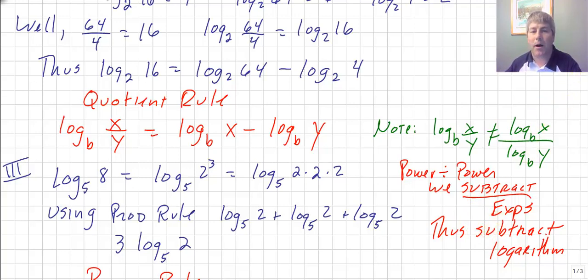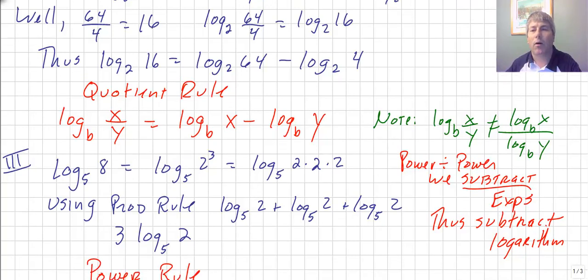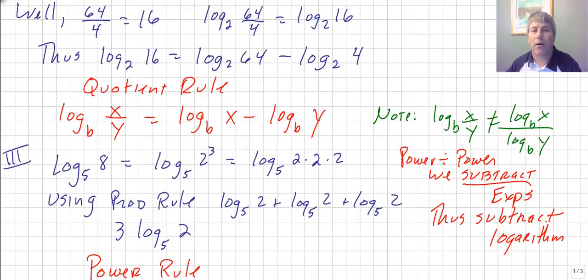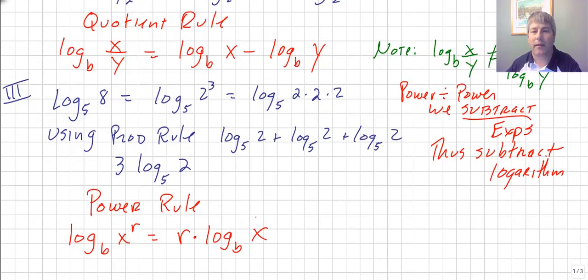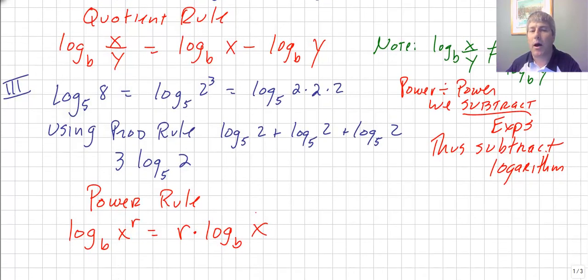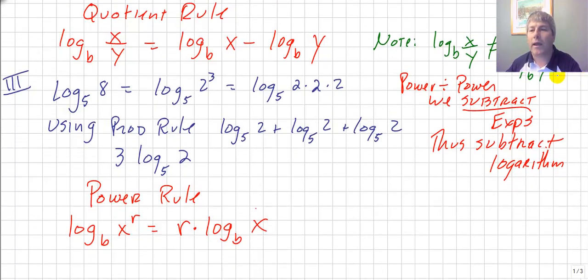So at a power times a power, we add the exponents or the logarithms. With a power divided by a power, we subtract the logarithms or subtract the exponents. But what about a power raised to a power?